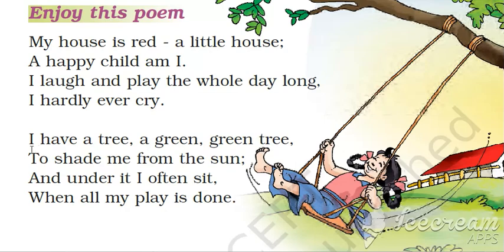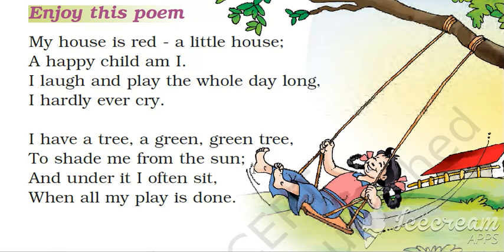Now the second paragraph — I have a tree, a green green tree, to shade me from the sun. Ab bacha keh raha hai I have, matlab mere paas hai, a tree — tree means ped. A green green tree — kaisa tree hai? Green, hare rang ka ped hai. To shade me from the sun — shade means chhaaya dena. Woh ped kya karta hai? Mujhe chhaaya deta hai sun se, suraj ki garmi se woh mujhe rahat deta hai.